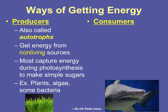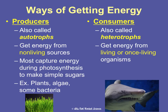The other way you can get your energy is by being a consumer, also known as a heterotroph. 'Hetero' is a prefix for 'other,' and 'troph' means nourishment. So heterotrophs get nourishment from other things — they get their energy from living things or once-living organisms. Examples include animals, humans, fungus, etc. We eat basically in order to get the energy that we need.